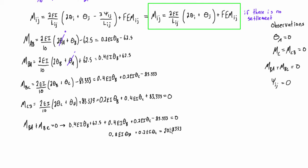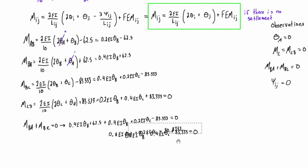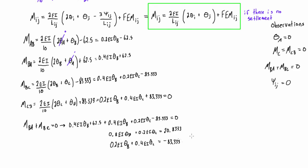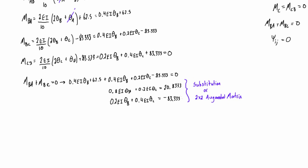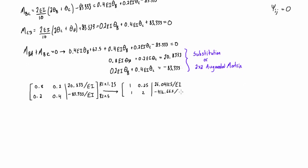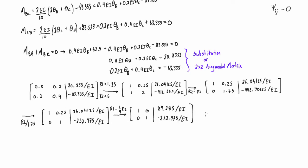We now have two equations with two unknowns, theta-B and theta-C. Bringing terms to the other side, the M-CB equation contributes as well. You can solve this by substitution or using a 2x2 augmented matrix in reduced row echelon form — use whichever you're more comfortable with. The matrix method spits out the values for theta-B and theta-C directly.